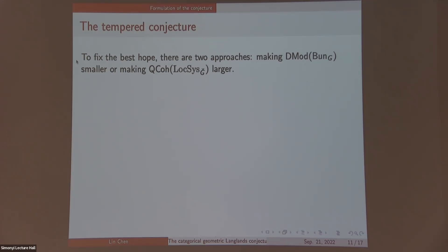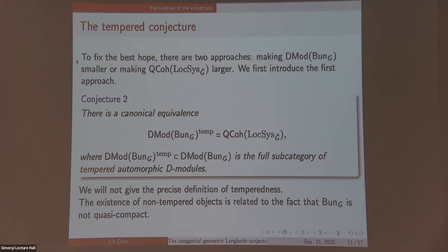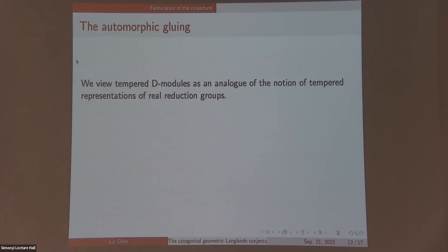But maybe people also would like to describe the entire category of D-mod of Bun_G or describe the entire category of Loc_SG-check. Then there are two strategies. One is keep D-mod and enlarge Qcoh. The other is keep Qcoh and shrink D-mod. Let's first describe the first strategy. It says conjecturally there's an equivalence from tempered D-modules on Bun_G to quasi-coherent sheaves on Loc_SG-check. I do not have time to tell you what's the definition of tempered objects in tempered D-modules on Bun_G, but it has to do with the fact that Bun_G is not quasi-compact.